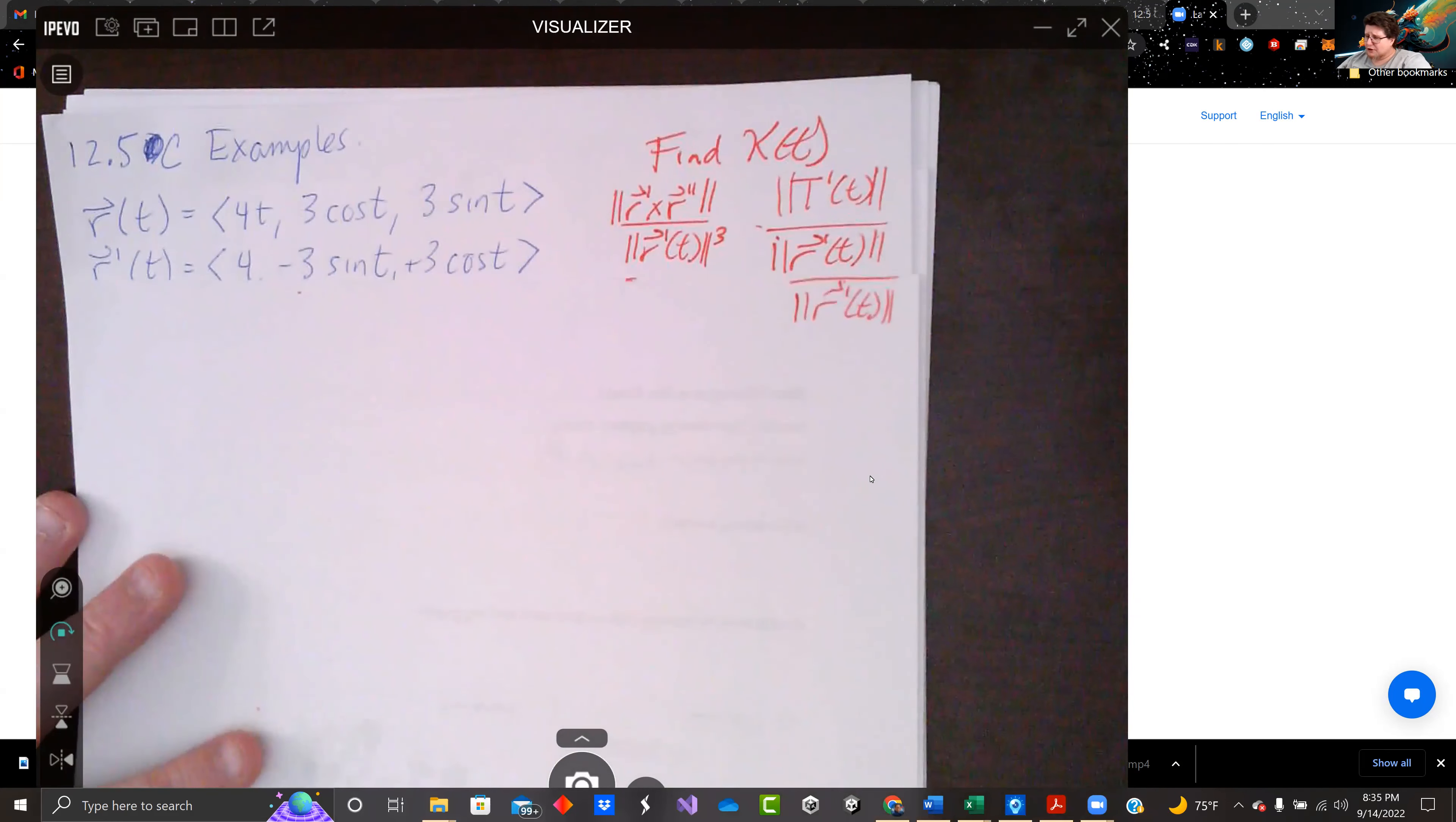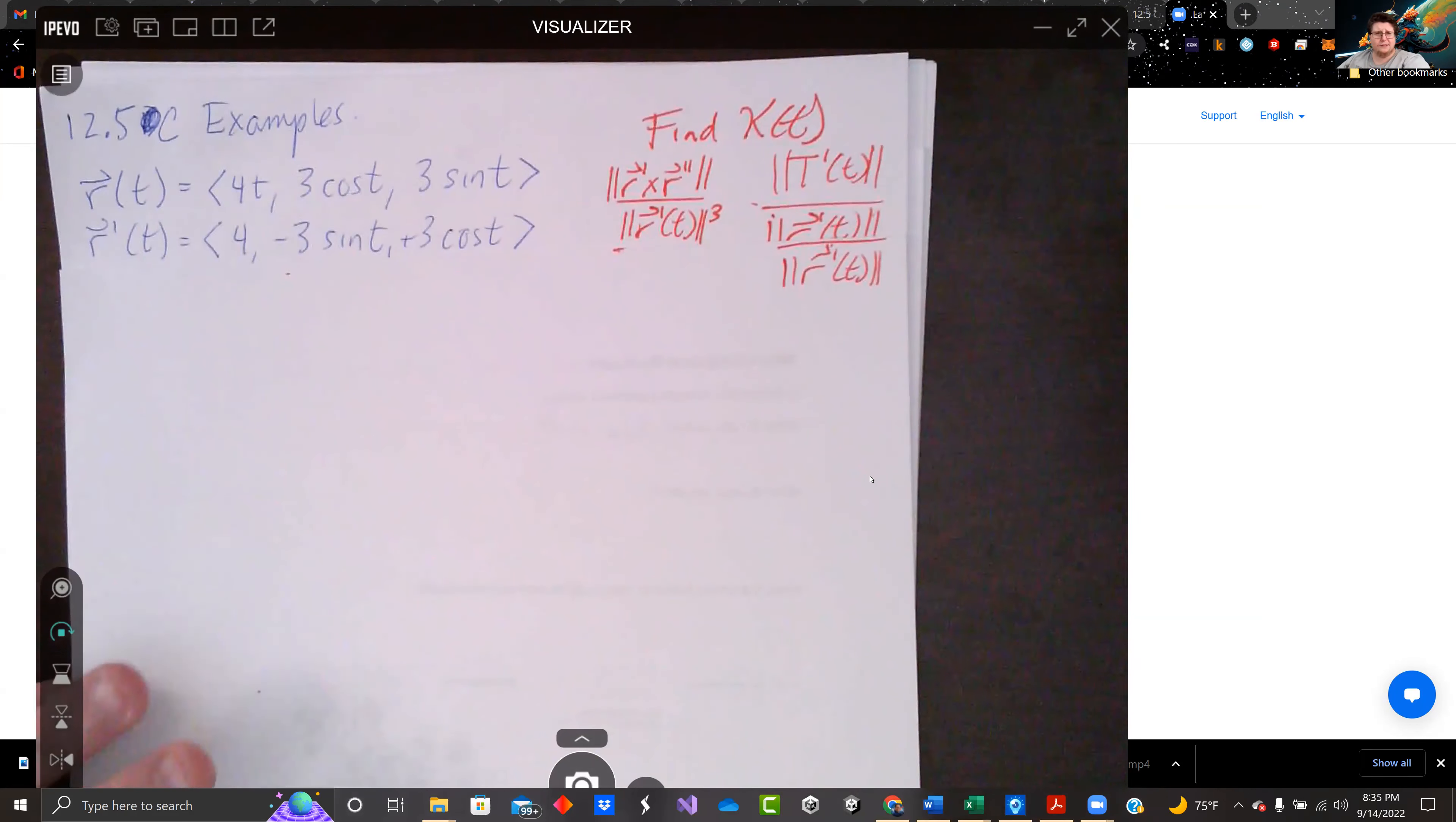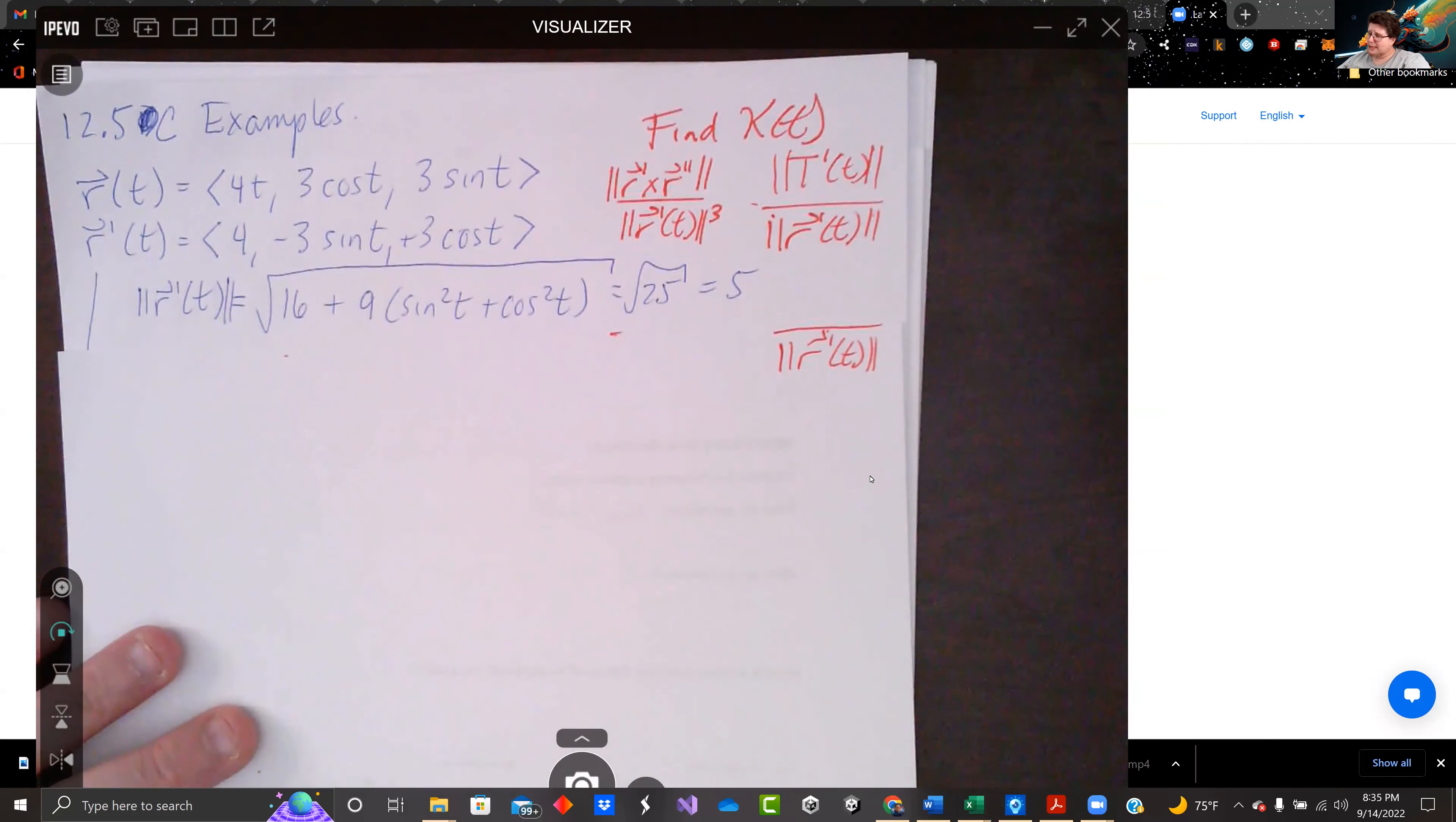So let's just figure out what r prime of t and r double prime look like, or if it's easy to use. So if we do r prime of t, the 4t goes to 4, 3 cosine becomes negative 3 sine, and 3 sine becomes 3 cosine. So we need the magnitude of it, no matter what we do. It's the denominator.